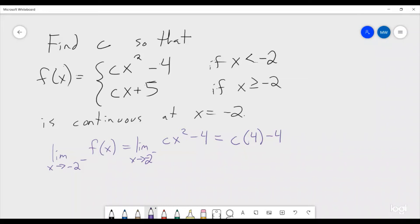So that's what one side is going to be. And then the other side is we have the limit as x goes to negative 2 from the right of f of x. This is equal to the limit as x approaches negative 2 from the right of this function. So that's going to be of cx plus 5. So that's going to be equal to minus 2c plus 5.